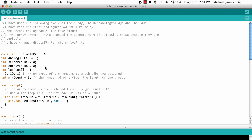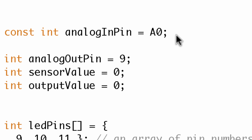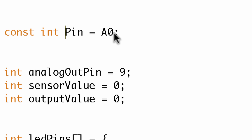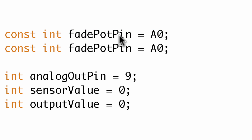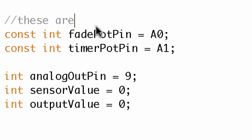The first thing I'm going to look at is variable naming. 'analogInPin' isn't descriptive enough, in my opinion. So I'm going to rename it to something like 'fadePotPin' for the fade potentiometer pin, set at A0. And I'll add another one called 'timerPotPin'. Now I have two very descriptive variable names that tell me more than 'analog input pin.' I'll also add a comment saying these are the potentiometer pin numbers.